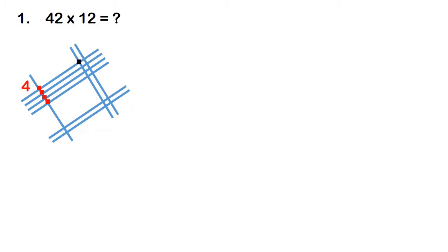Then move to the middle part and count: 1, 2, 3, 4, 5, 6, 7, 8 — so totally 8 dots. Then the lower section gives 1, 2 — only 2 dots.